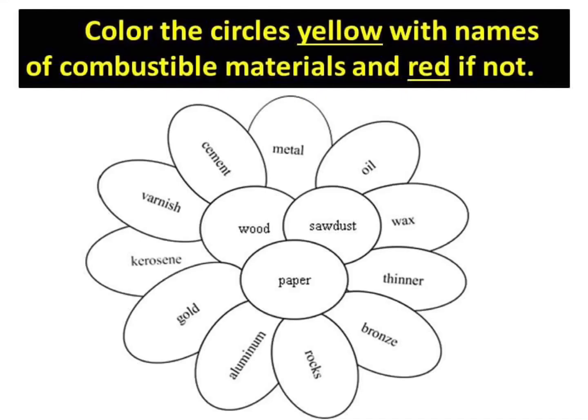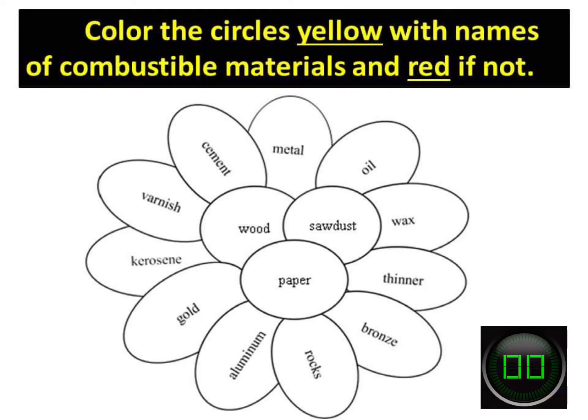Activity 2: Color the circles yellow with names of combustible materials and red if not combustible.